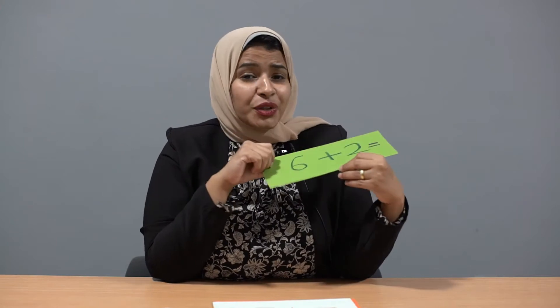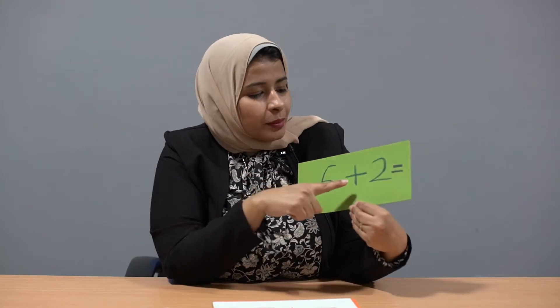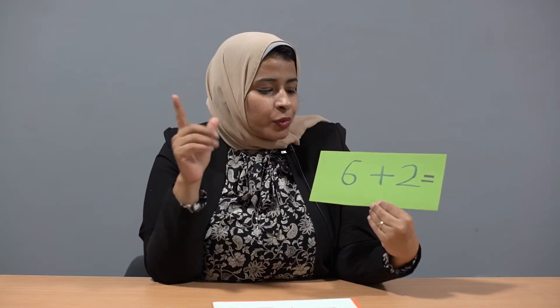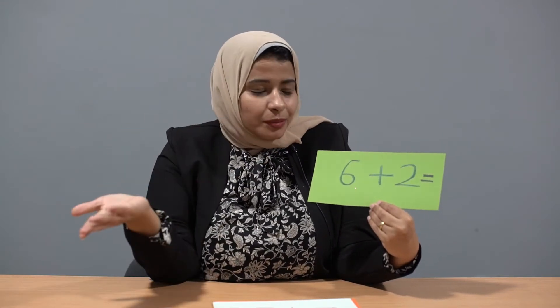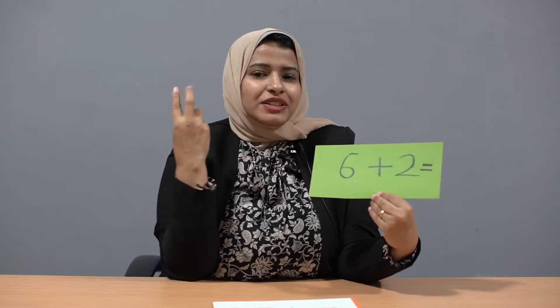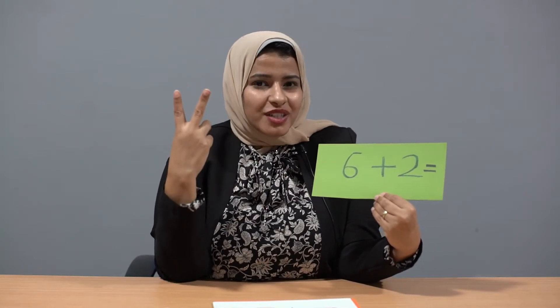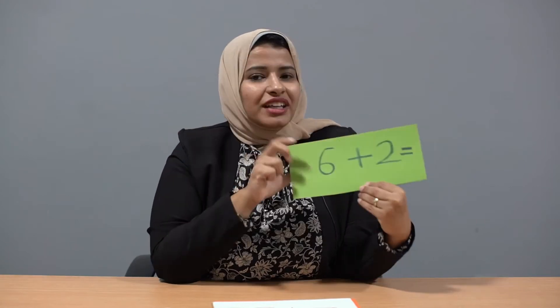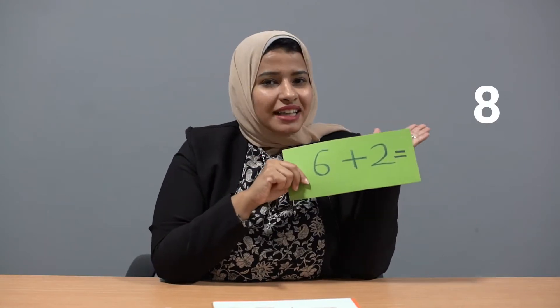Let's take another equation: six plus two equals. Let's do the steps — which is the bigger number? Six. So six in my mind, and two in my hand. After six: seven, eight. So the answer is eight.